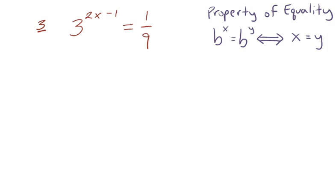In this problem, 3 raised to the quantity 2 times x minus 1 is equal to 1 over 9. Right away we notice our variable x is in an exponent, so we know that we're going to have to use our properties of exponents to solve this problem.